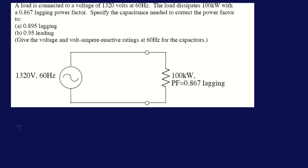This is a corrective power factor type of problem. A load is connected to a voltage of 1320 volts at 60 Hertz. The load dissipates 100 kW with 0.867 lagging power factor.